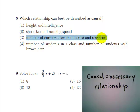Number of correct answers on a test and test score, well, your test score reflects the number of correct answers that you got, so yes, these two are causal, so the answer choice is three.